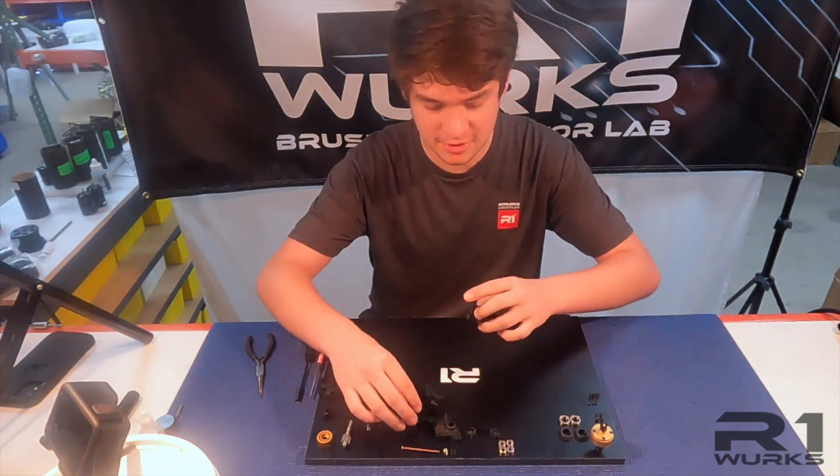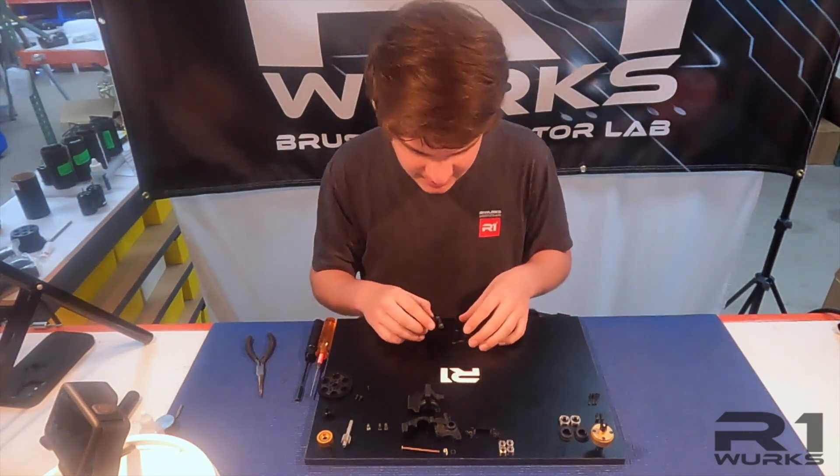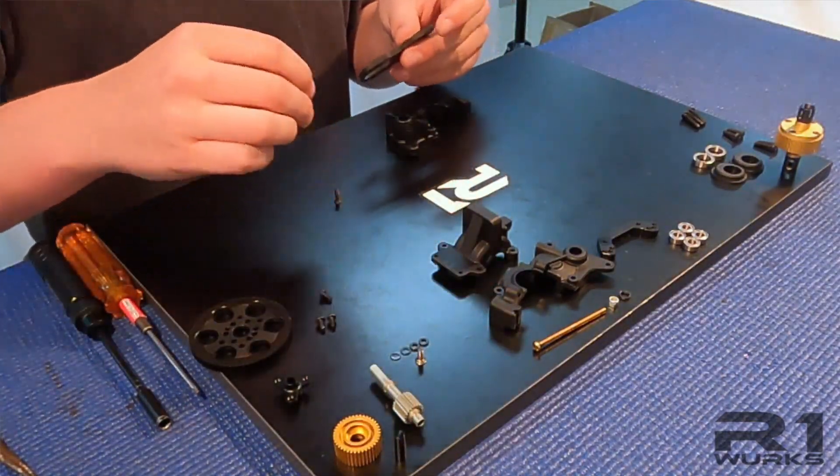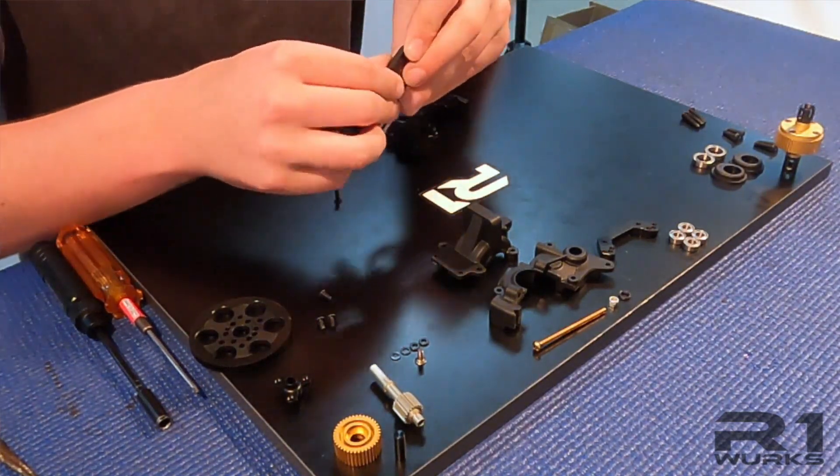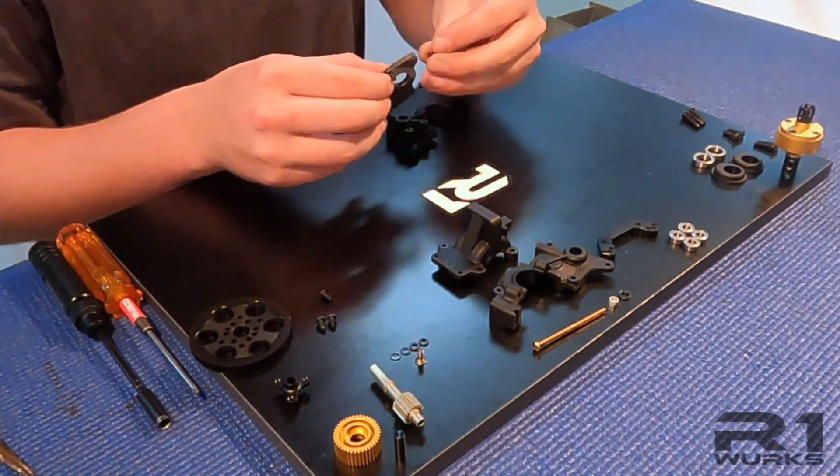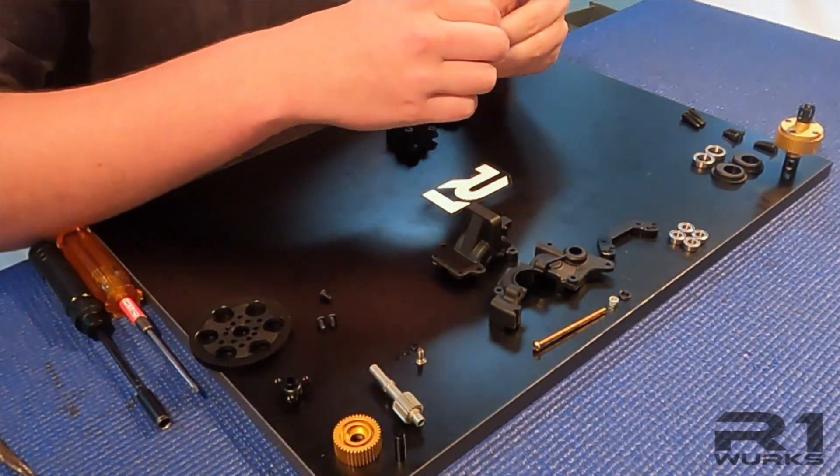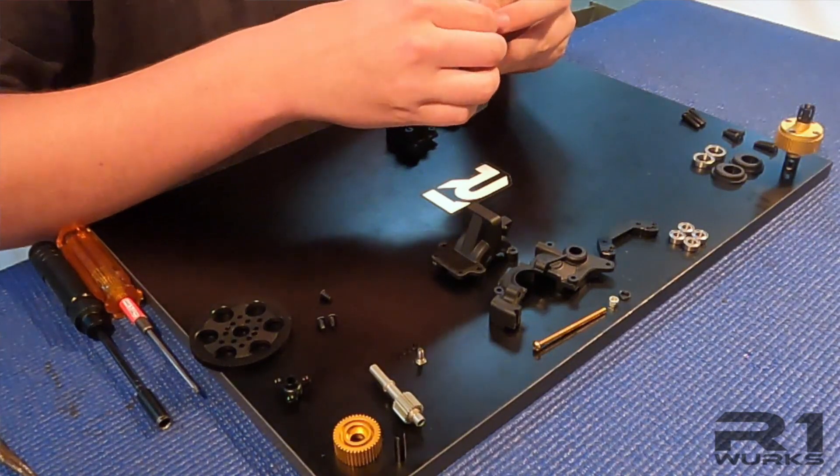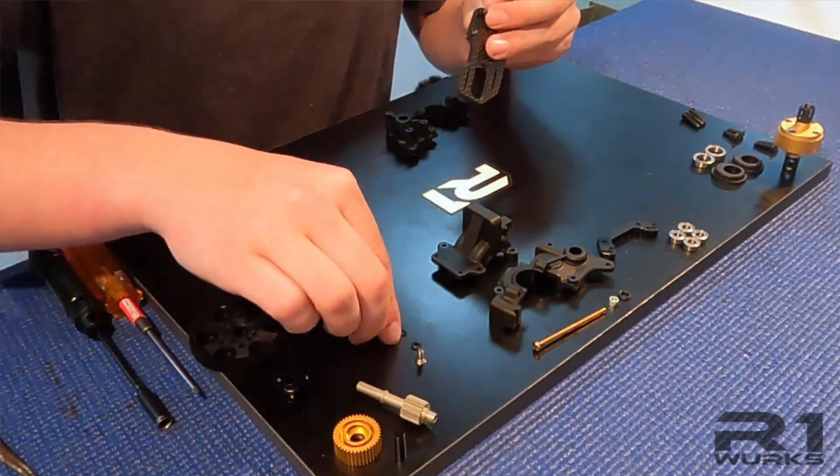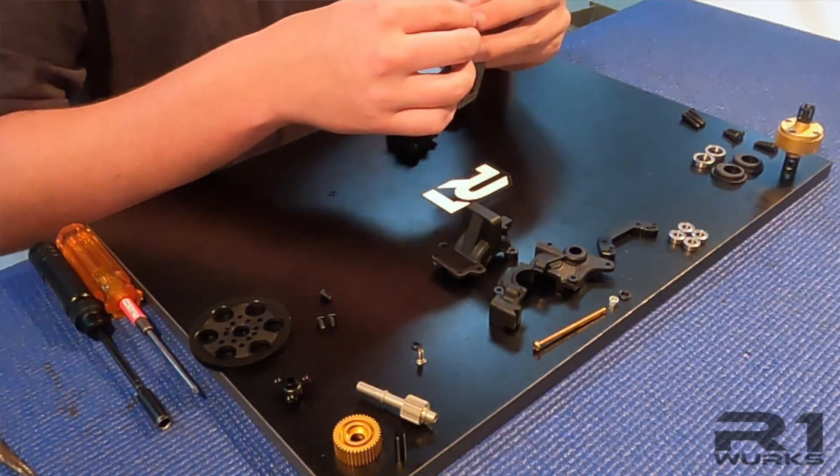So the first thing we are going to do is put on the motor plate. We need to put these two flatheads into the top here. And since the AE normally has a motor guard, or a spur guard, we need to shim this a mil and a half.